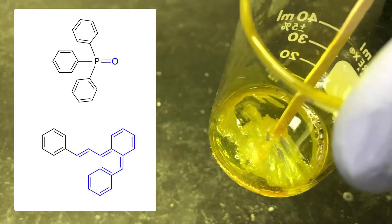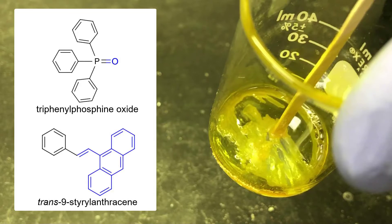In the previous video in the series, I described a Wittig reaction between benzyltriphenylphosphonium chloride and 9-anthraldehyde with sodium hydroxide base. That produced two products: triphenylphosphine oxide and trans-9-styrolanthracine. In this video, I'll describe recrystallization to separate the alkene product from the triphenylphosphine oxide, and then describe melting point analysis of that alkene.